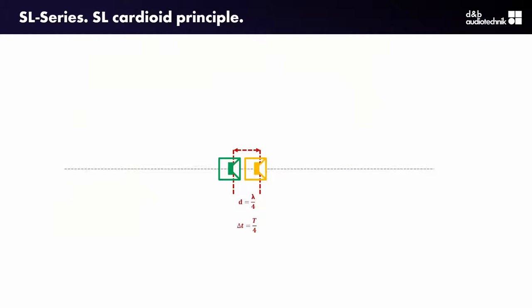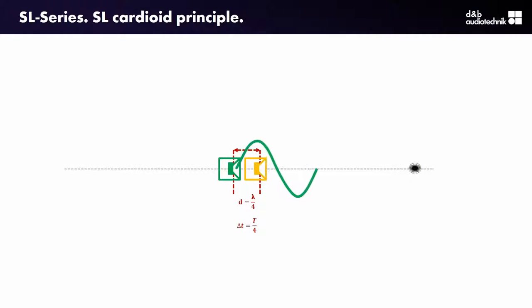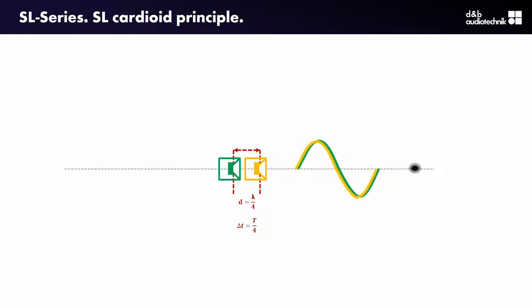How does this work basically? Imagine we have two sources. They need to be spaced apart at a certain distance which corresponds to one quarter of the wavelength. Additionally, they have to be delayed with a time delay which represents one quarter of the cycle time. The rearward source starts to emit first, and then at the right moment the front source joins, so that the two waves combine coherently and add up — or sum — at the listener's ear.